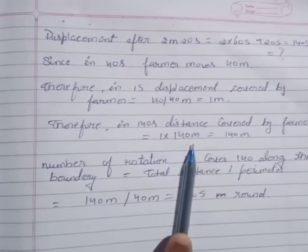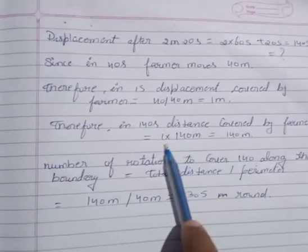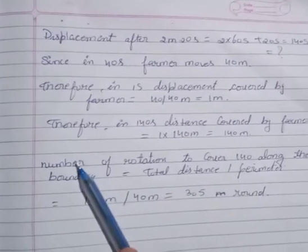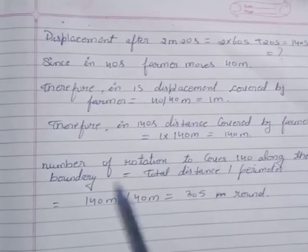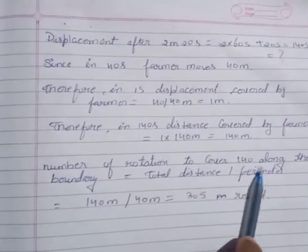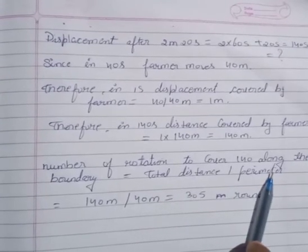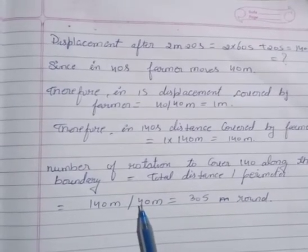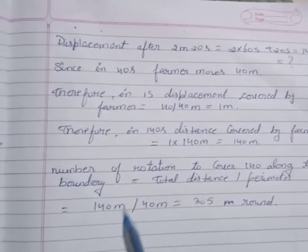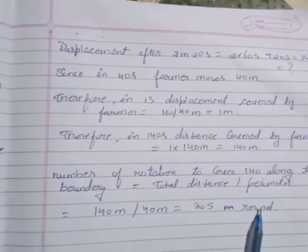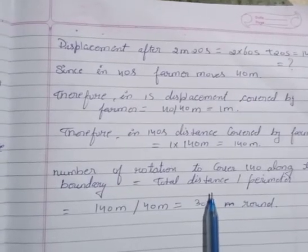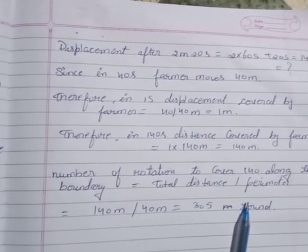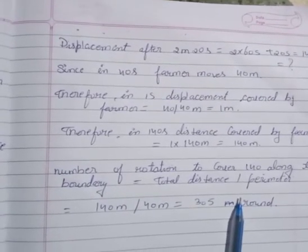To find the number of rotations: total distance covered is 140 meters divided by the perimeter of 40 meters, which equals 3.5 rounds. The farmer completes 3.5 rounds of the square field in 140 seconds. The remaining answers will be continued in the next video. Thank you.